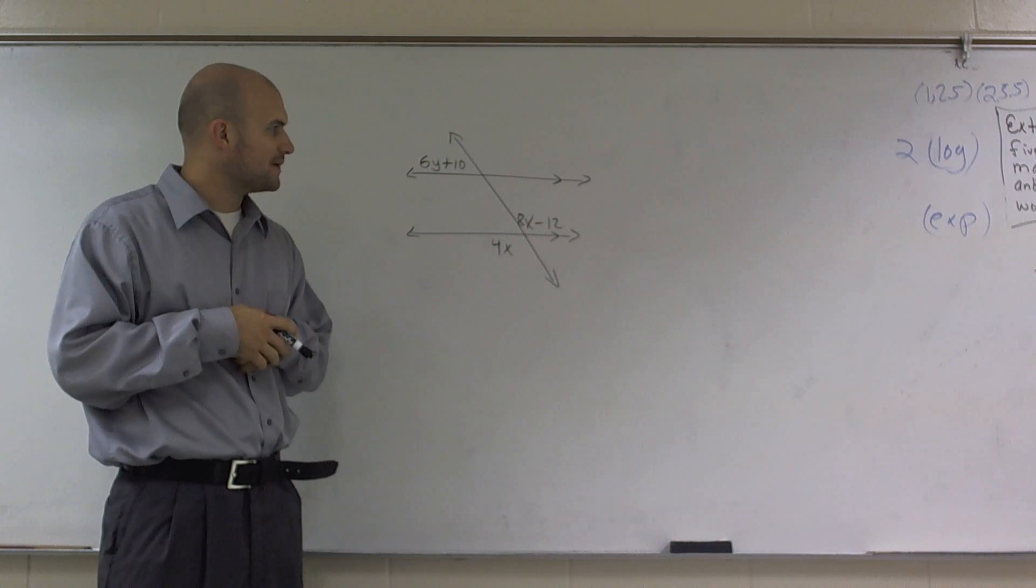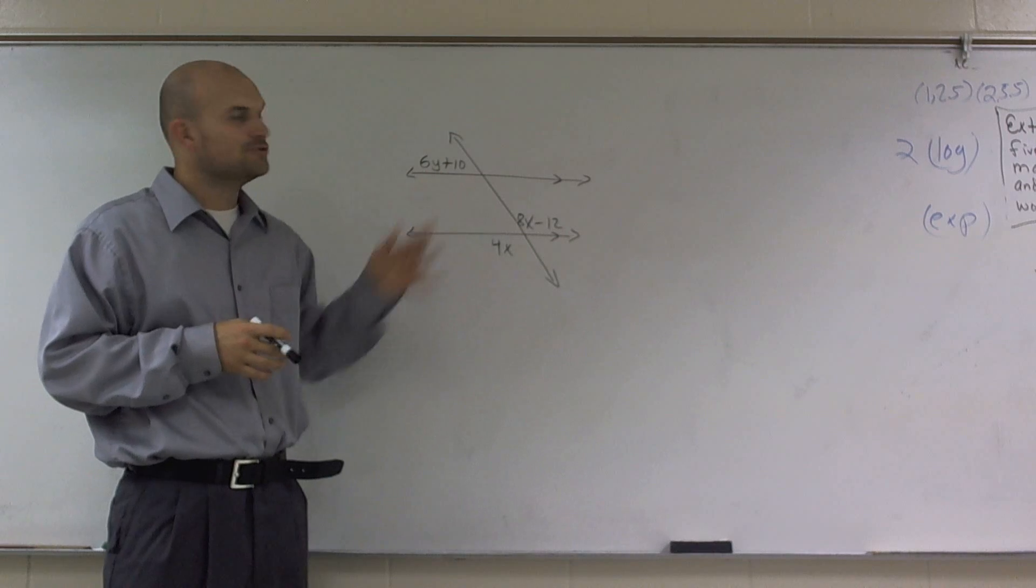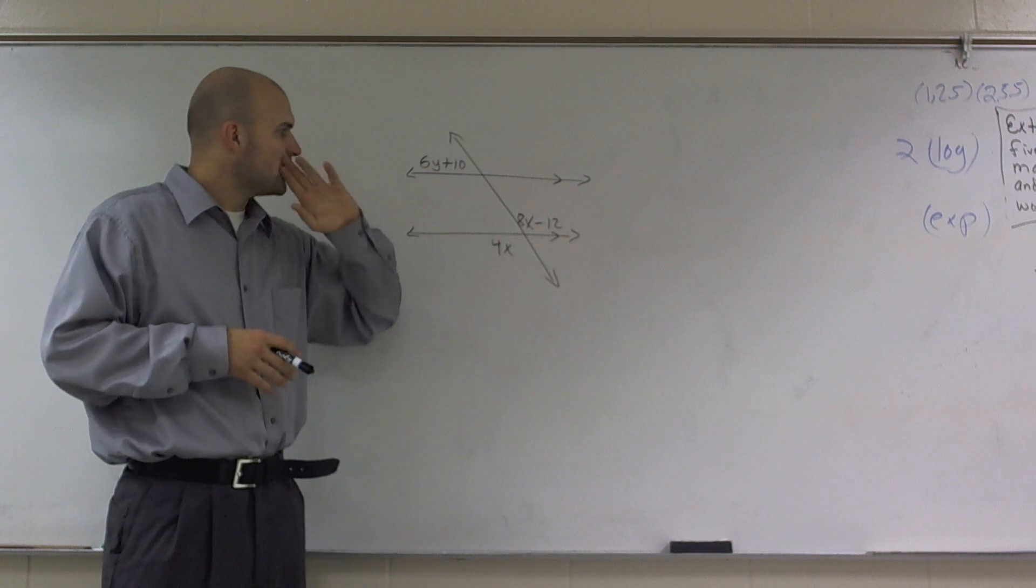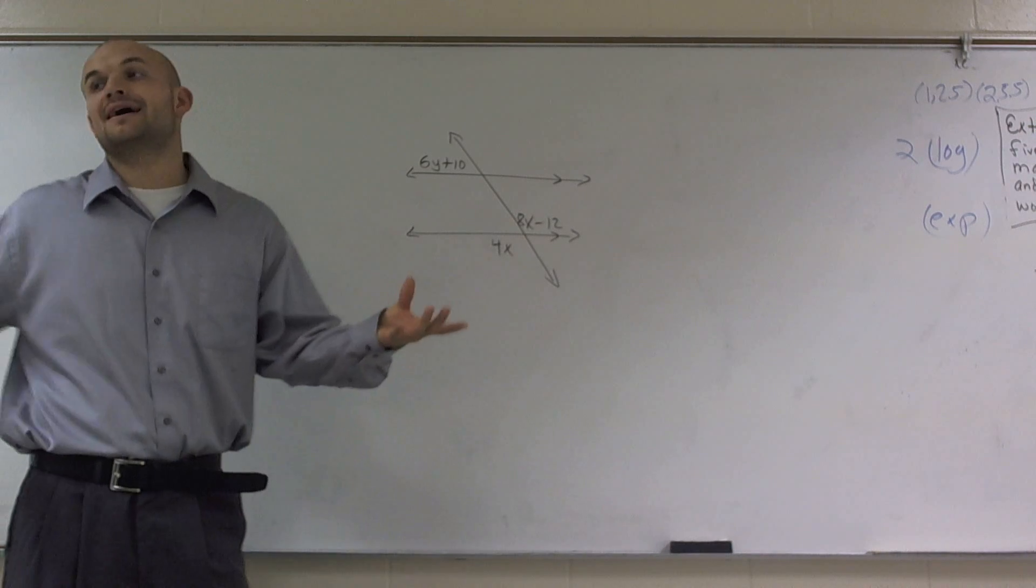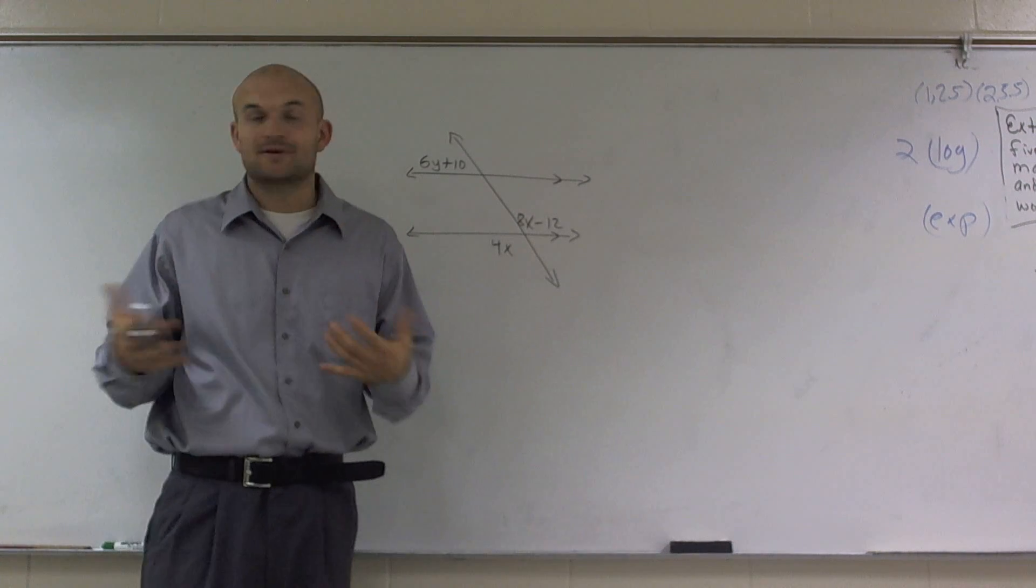OK, what I'd like to do is show you how to solve for x given two parallel lines, which are represented here, and a transversal. So a couple things we need to know. When we have parallel lines and a transversal, a lot of things happen, right?